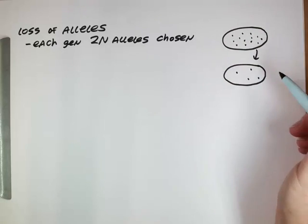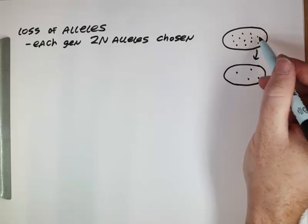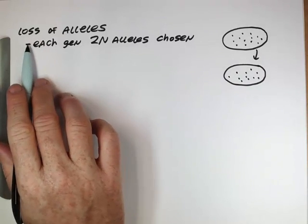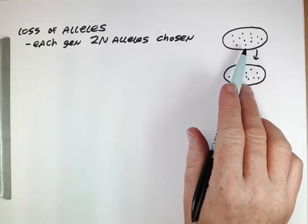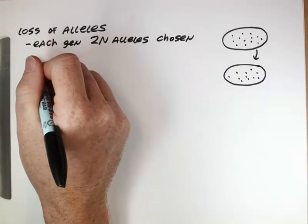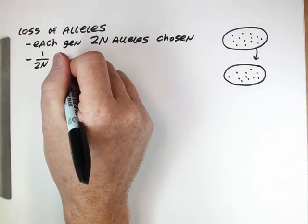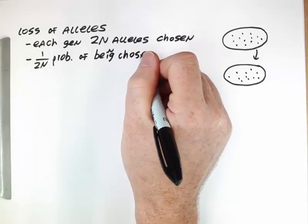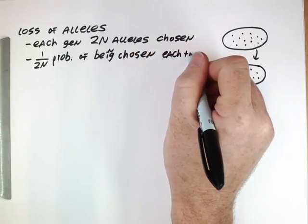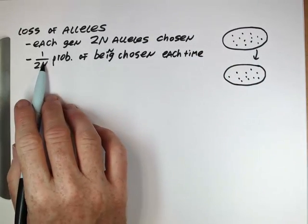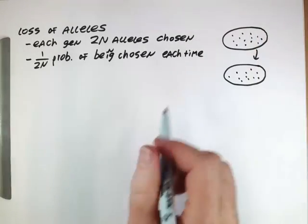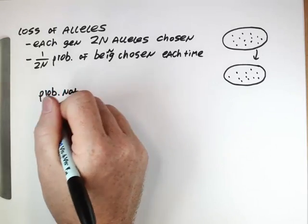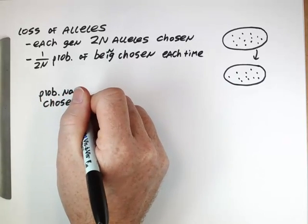And by the time we go through and do this, some of these won't be chosen. Some of these will be chosen more than once when we make our new population. Now, how many are lost? In each generation, 2n of these alleles are chosen. But again, some can be duplicates. Each time there's one chosen, there's a 1 over 2n probability of being chosen each time, right? Each time one of these alleles is picked, it's got a 1 over 2n probability of being chosen if we focus on one of those alleles. So what's the probability that an allele is not chosen at all?